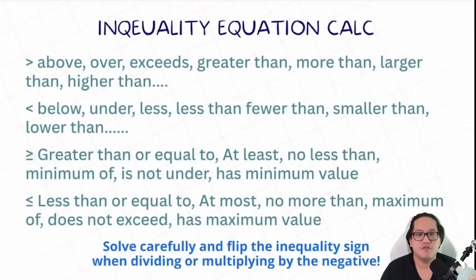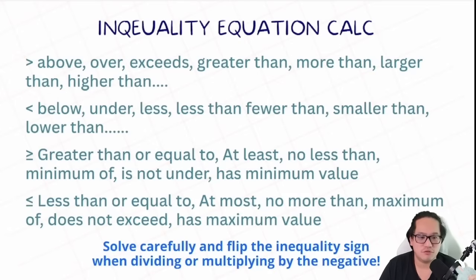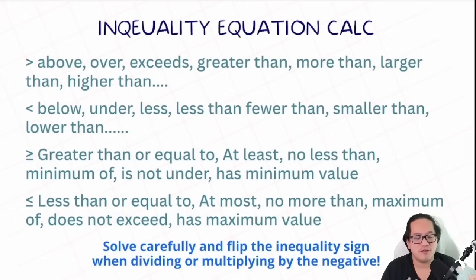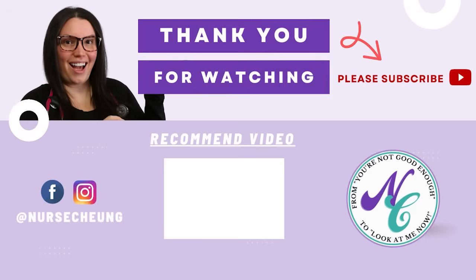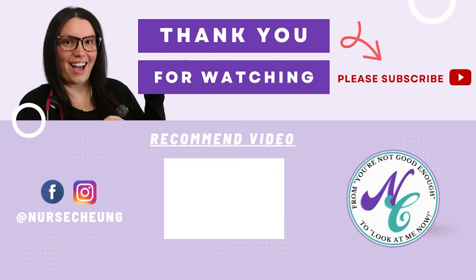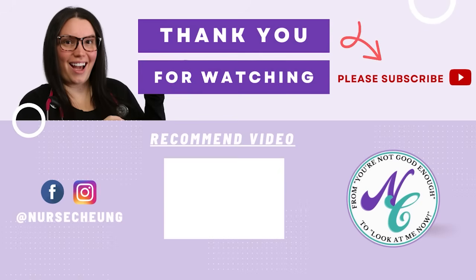Here is the final cheat sheet for inequality equation calculation. All these keywords help you identify what kind of sign to use in your equation. And the last thing to remember: every time you multiply or divide by a negative number, flip the inequality sign. And that's everything you need to know for inequality equation calculation. If you have any questions, leave them down below — we love answering your questions. Head over to nurschangstore.com for tons of additional resources to help you feel more confident with your ATT exam. I'll see you in the next video. Bye.